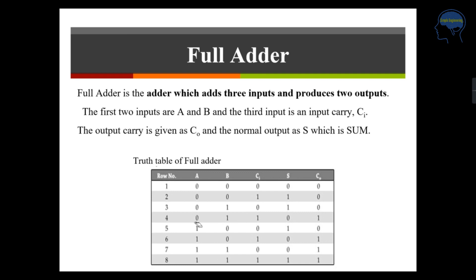Here you can see that 0 plus 1 that is 1 and 1 plus 1 is 10 which means that your sum is 0 and you have a carry 1. Same like that here also you can see that whenever two 1s are there your sum will be 0 and carry is 1.